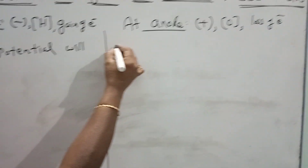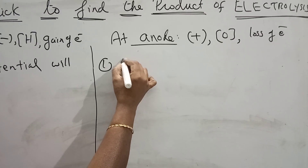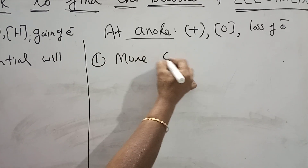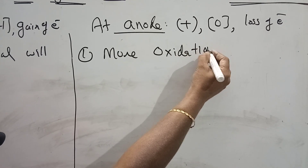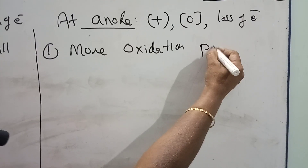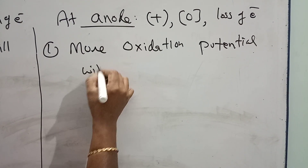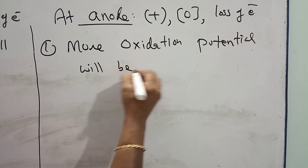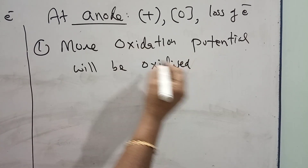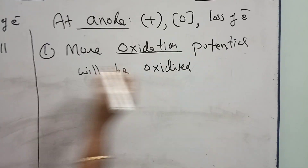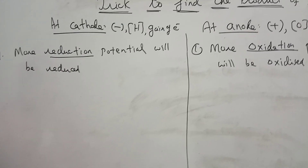At the anode, the first point is oxidation. The same thing — whichever is having more oxidation potential will be oxidized. So you have to think of the comparative statement of oxidation potential as well as reduction potential. This is the first condition.